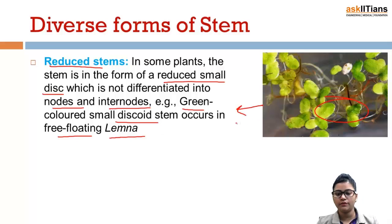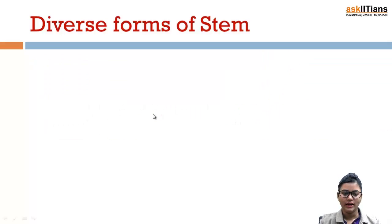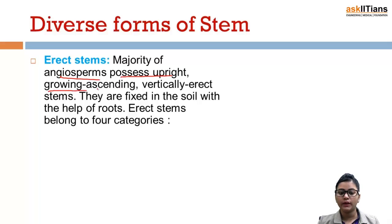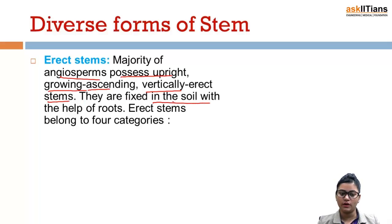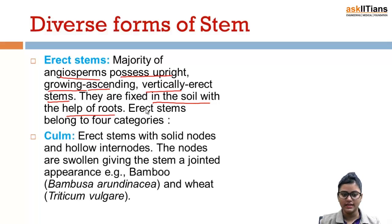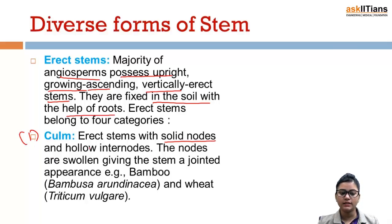An example of reduced stems is the green-colored small discoid stems that occur in free-floating Lemna. Next comes erect stems. The majority of angiosperms possess upright, vertically growing erect stems. They are fixed in the soil with the help of roots. Erect stems belong to four categories.